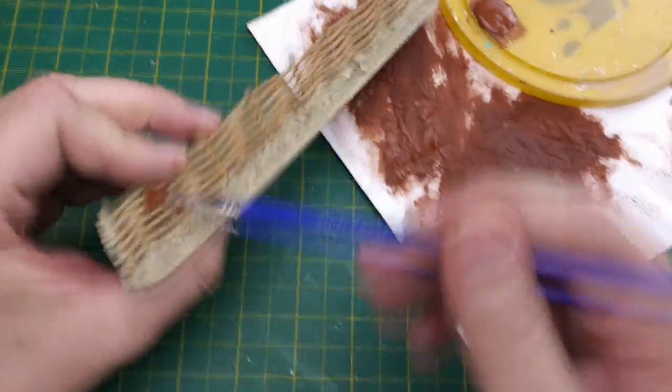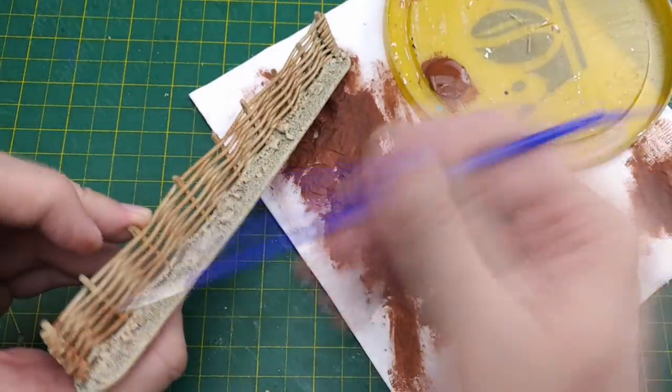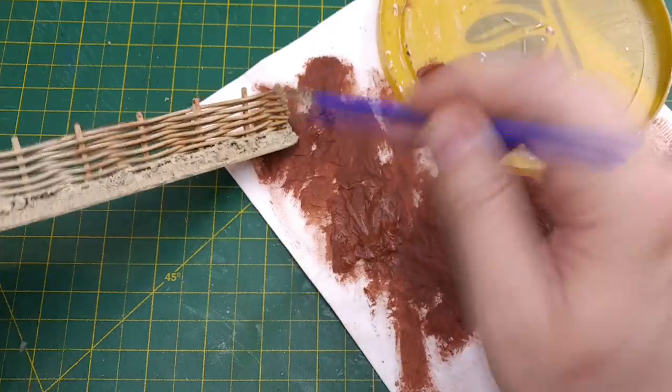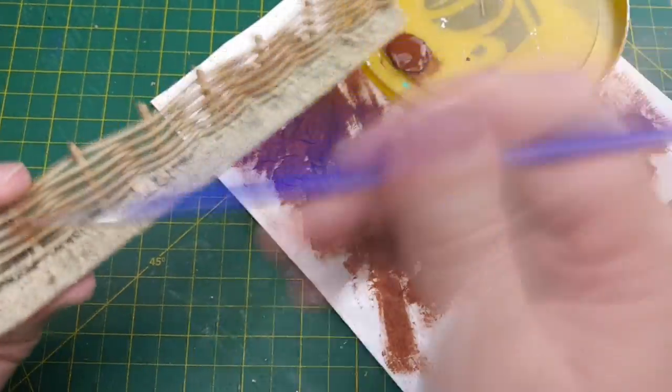We use the same technique on our wattle fence but we need to be more careful with our paint. This is because the plastic coating on the wire doesn't have any texture on it. We have to use less paint in our brush so that the fence doesn't end up with a splotchy appearance.